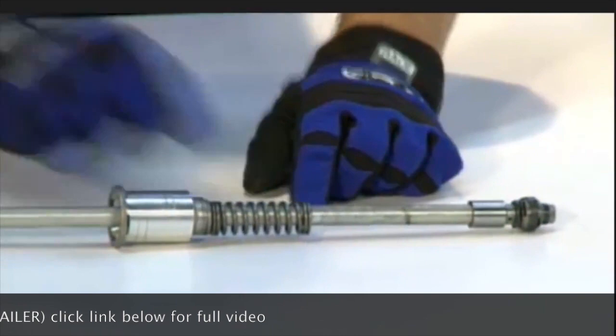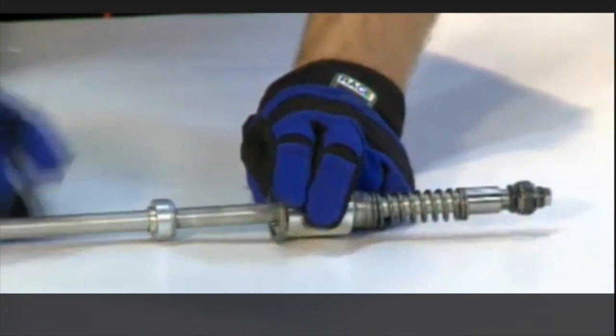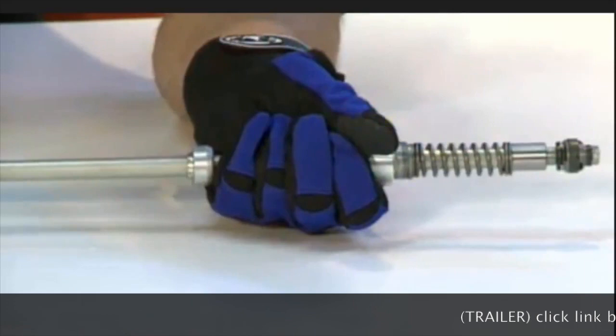when you pull wheelies, obviously the fork extends, which moves the rebound rod comes up to the top. If it extends, you don't want to have metal parts smash into each other.